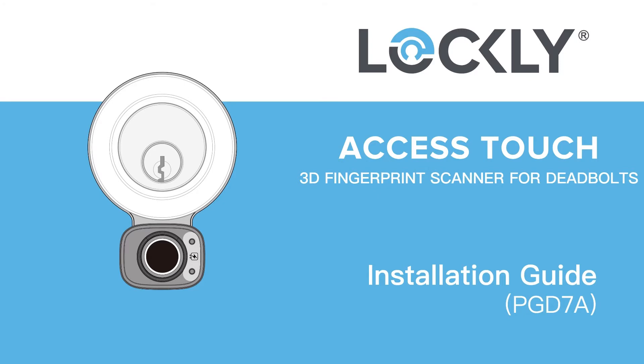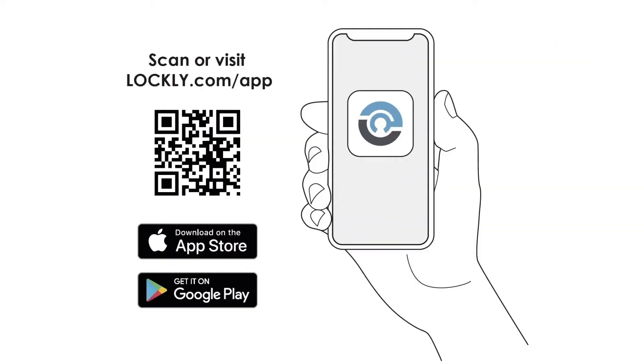Congratulations, this concludes the installation of the Lockly Access Touch 3D fingerprint scanner for deadbolts. To complete its setup download the Lockly app from the App Store or Google Play. Register and/or log into your account and follow on-screen instructions for adding a new lock.